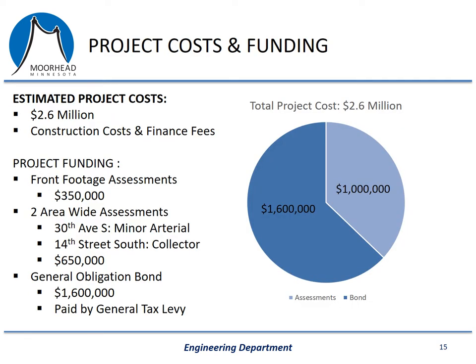When the city does projects like this, we typically get questions such as: how much does the project cost and where does the money come from? We've estimated that this project will cost approximately $2.6 million, including all construction costs as well as fees associated with financing the project. The funding comes from two sources: special assessments and general obligation bonds. Special assessments are expected to generate approximately $1 million towards the project, and the remaining $1.6 million will be funded through general obligation bonds that the city obtains on the open market, paid through the city's general tax levy fund.